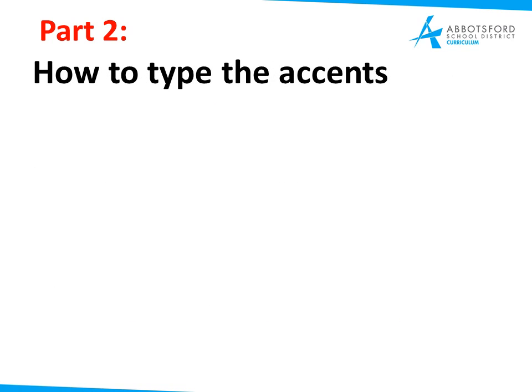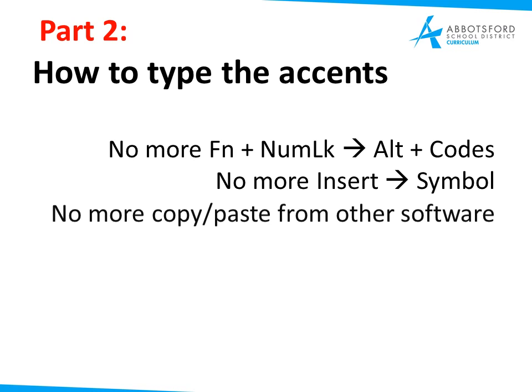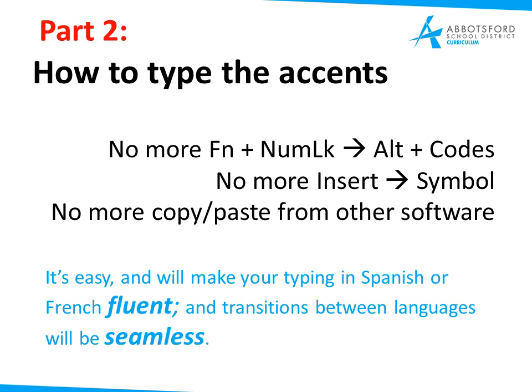In part two I'm going to show you how to actually type the accents. You'll find that you no longer have to use number lock and alt codes — things like alt 130 and 135 — and have to memorize all of those. No longer will you have to go to Insert > Symbol and find the correct symbol, or copy and paste from other software. Once your keyboard is set up to US International, this method is extremely fluent and seamless between languages. If you're anything like me, you probably operate in multiple languages and don't want your computer set to just one keyboard and one language all the time. This method is extremely effective and a great way to move forward.